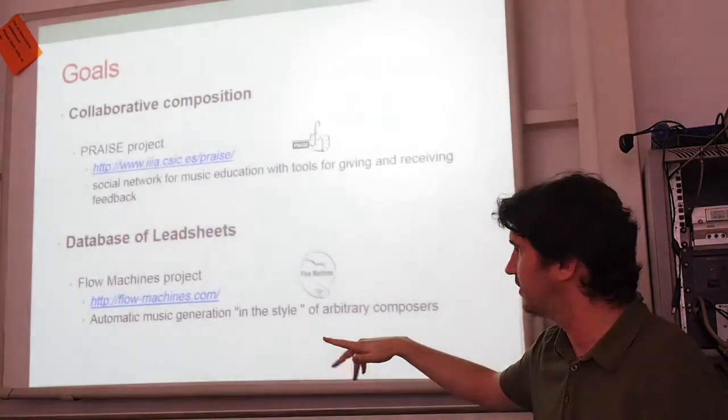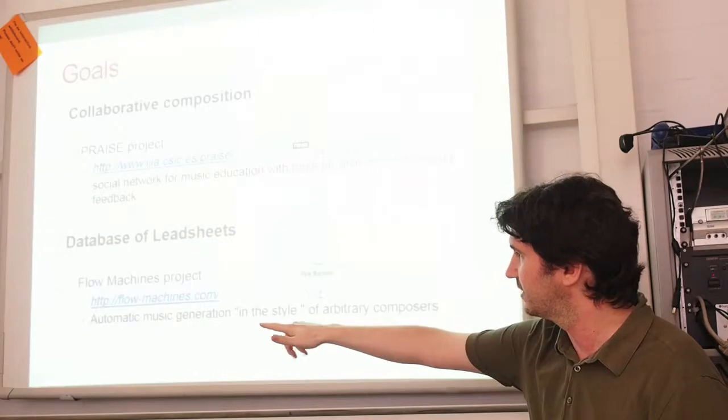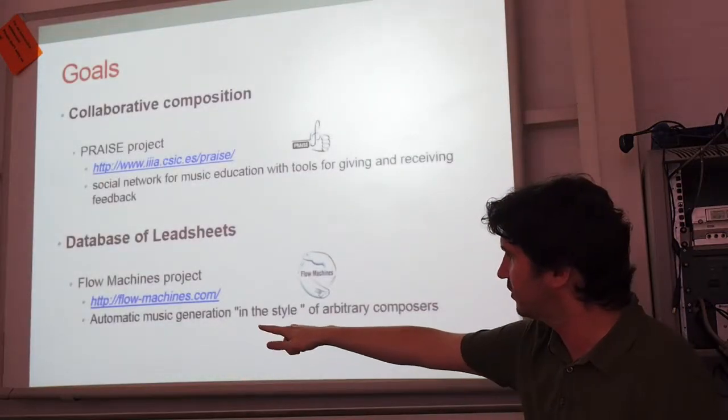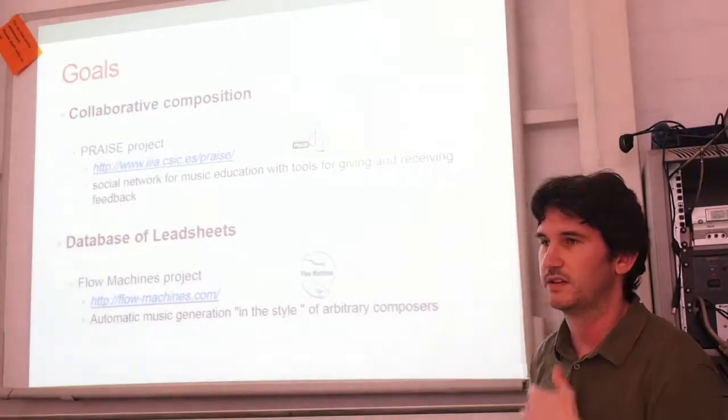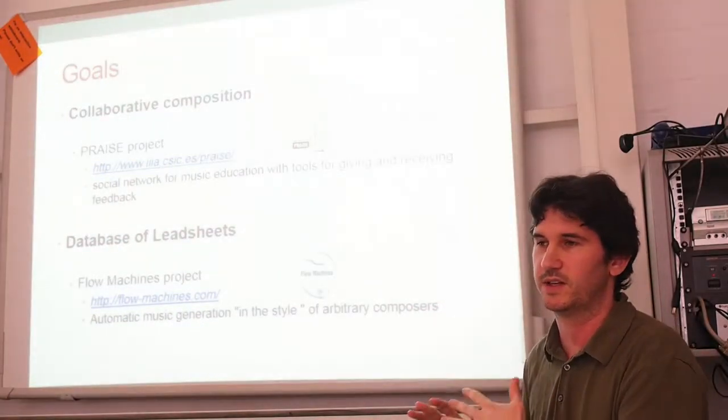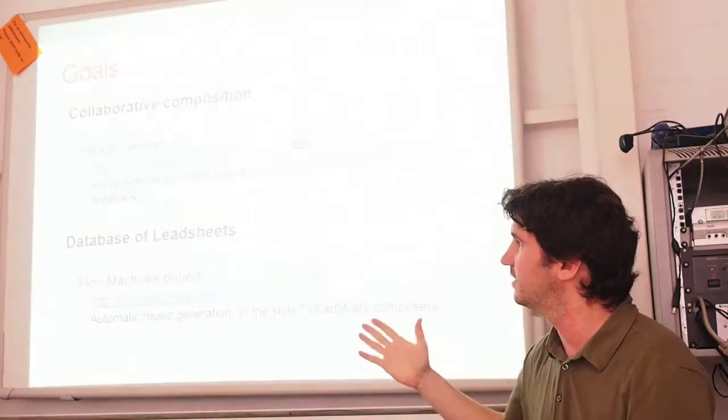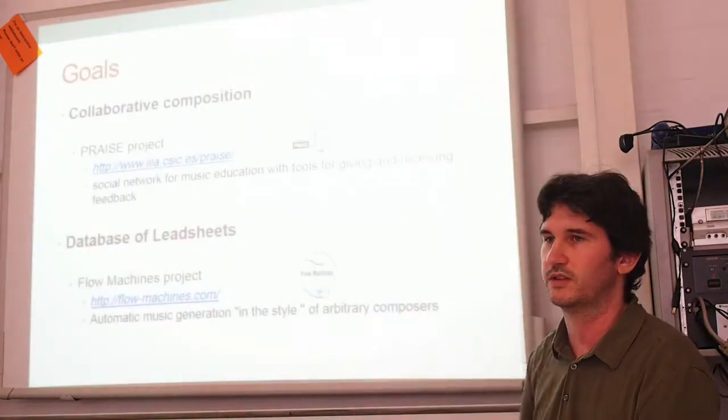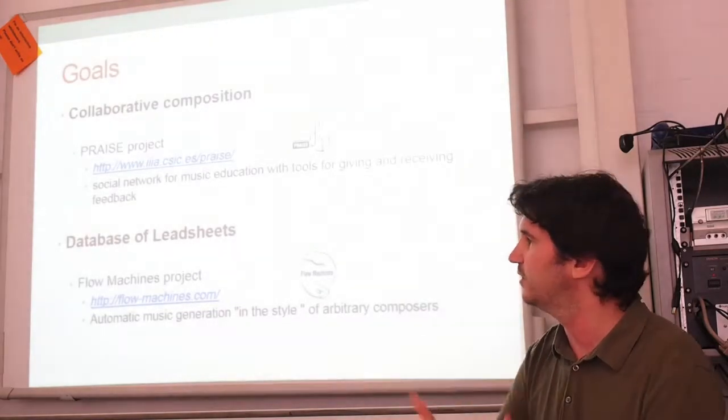And then there's another project called Flow Machines, which is about many things, but one of the things is automatic music generation in the style of arbitrary composers. So the computer generates songs based on statistical models. And we needed a database of lead sheets of known composers to have a database to generate the models.